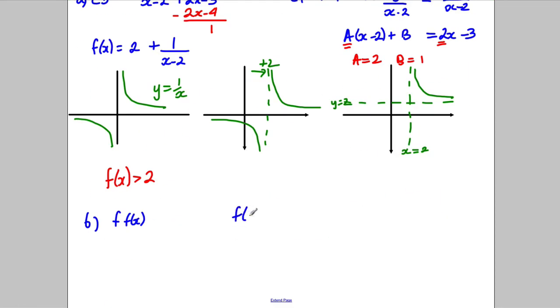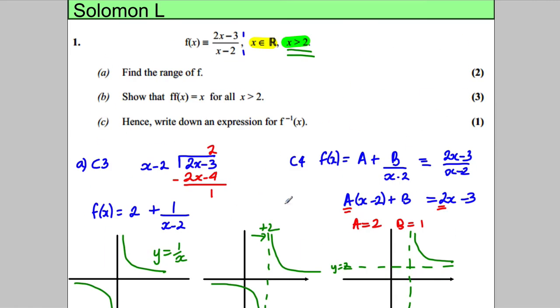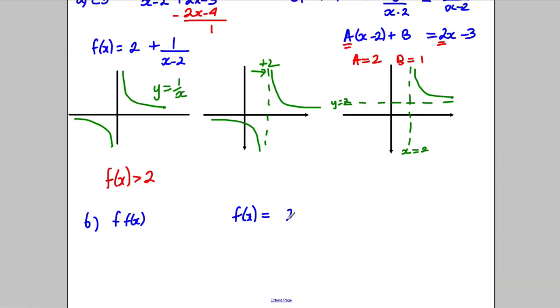So this is going to be confusing. Let's write down our f(x) again. Our f(x) was equal to (2x - 3)/(x - 2), and it was also this here. Now I think it would be easier if we probably use this form here; I've got a feeling that looks a lot simpler to substitute.